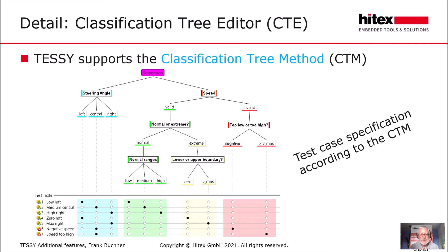TESI contains a perspective for creating test case specifications according to the classification tree method. A specification consists of the classification tree in the top part and a table below specifying test cases. This classification tree method includes equivalence partitioning — for instance, for the steering angle, values are divided into three equivalent classes: left, central, and right. There are also invalid and extreme values. This makes it easy to specify test cases according to standards like ISO 26262, where equivalence classes and boundary values are recommended.